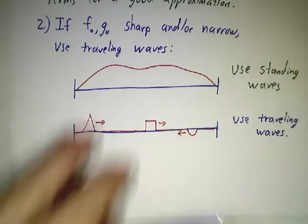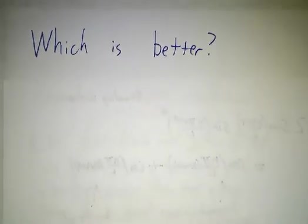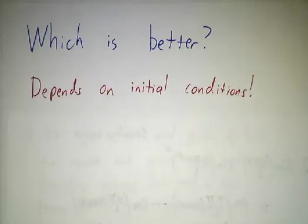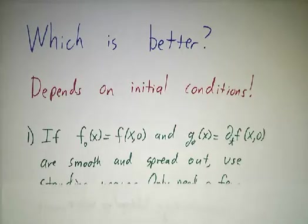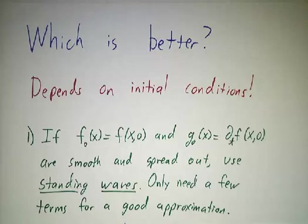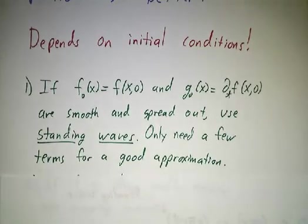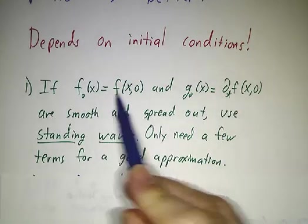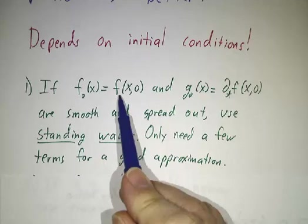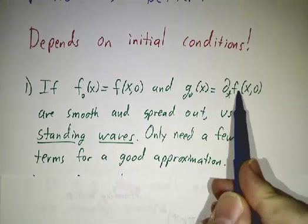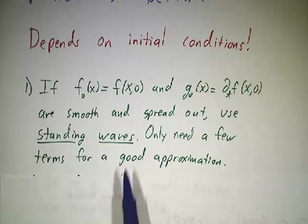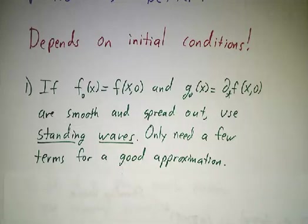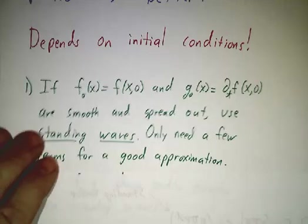So we've got these two descriptions of waves, either as traveling waves or as standing waves. And the question is, which should you use? And the answer is it depends on the initial conditions. If your initial conditions are smooth and spread out, then we know that the Fourier series for these functions decays really fast. You only need a few terms and you've got a really good approximation to these functions. So you only need a few standing waves to give you a very good approximation to the solution to your wave equation.